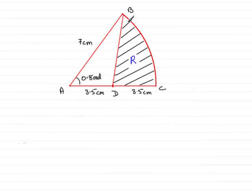Now in this part of the question we're asked to find the shaded area R. In order to find the shaded area R, what we can do is find the area of the sector ABC and subtract the area of this triangle ABD.